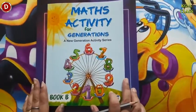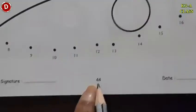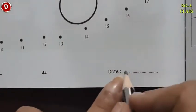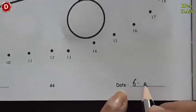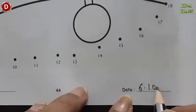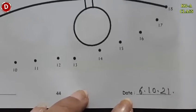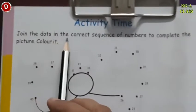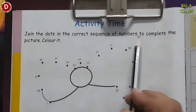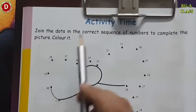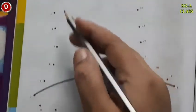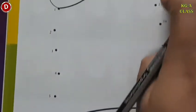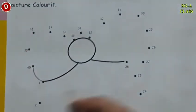Children, now it's activity time. Bring your maths activity book. Open page number 44 and write today's date — 6th October 2021. Now we will read the instruction: join the dots in the correct sequence of numbers to complete the picture, then color it. So first we have to join the dots and then we will see the picture — these dots will make a picture. Let's start.